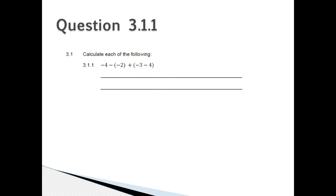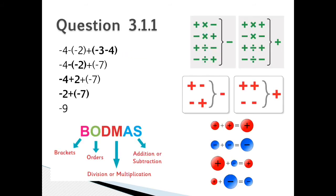Question 3.1.1: Calculate each of the following: negative 4 minus negative 2 plus negative 3 minus 4. Question 3.1.1: Remember to use BODMAS, which is our brackets first, then our orders, then division or multiplication, and then addition or subtraction. So therefore the answer for this question will be negative 9.